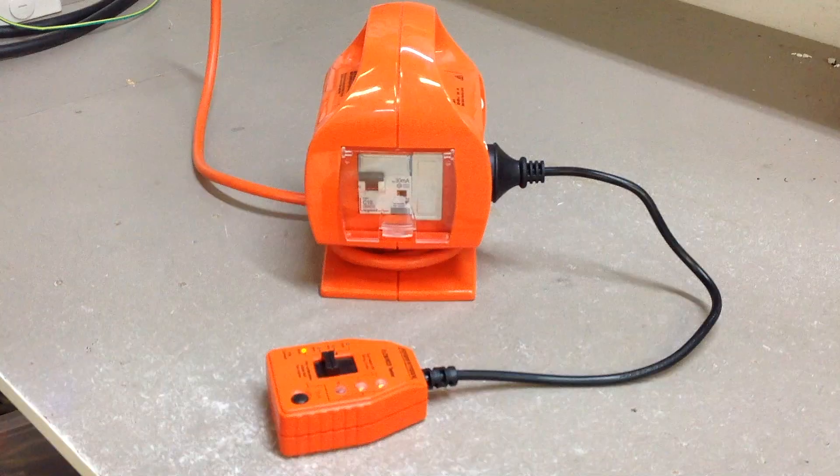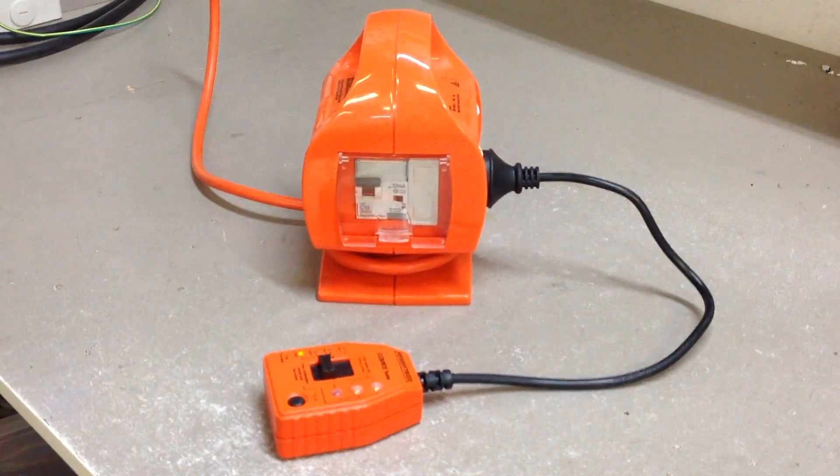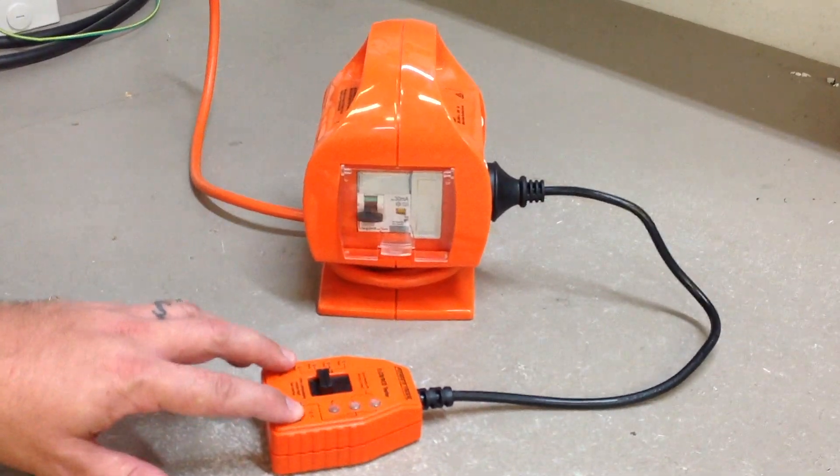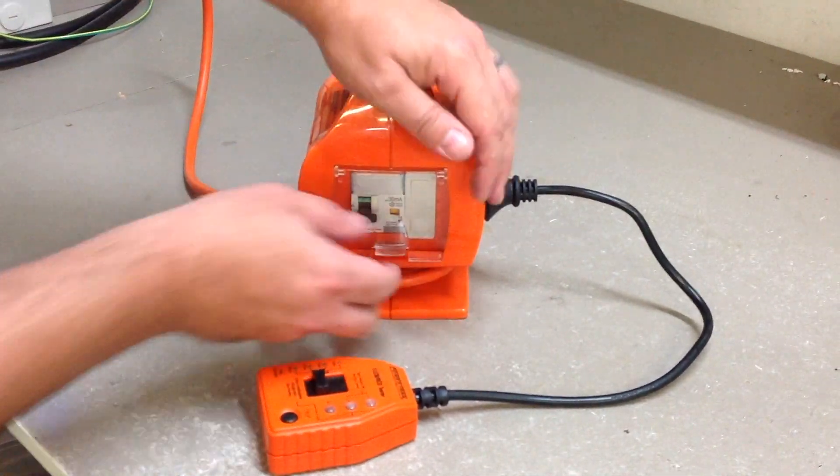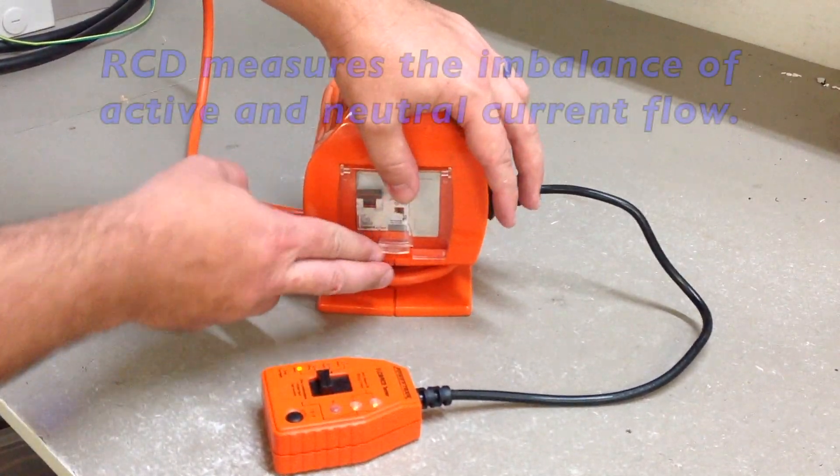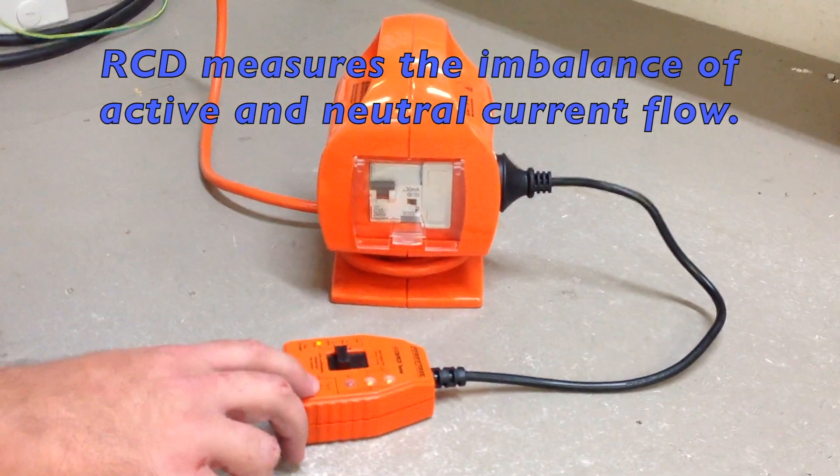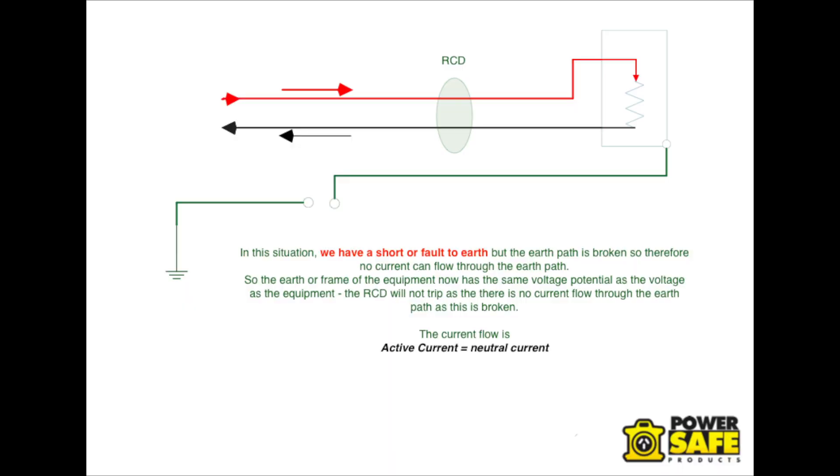This is how any RCD would operate that is fitted to a power outlet or inside the main electrical board. It measures the imbalance of active and neutral. For the imbalance to occur, there needs to be an earth path circuit that the electricity can flow through.